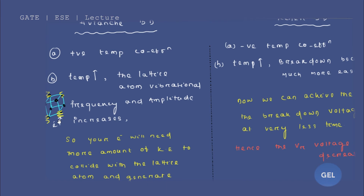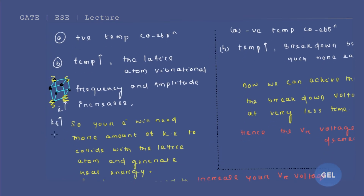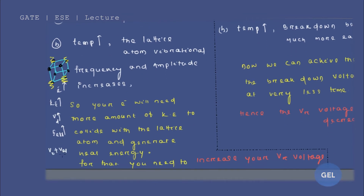So the electron needs more and more kinetic energy. How do we get more kinetic energy for the electron? In order to get more kinetic energy, you must have more drift velocity. In order to get more drift velocity, you must have a higher effective electric field, because electric field and drift velocity are directly proportional to each other. And to get a high effective electric field, from the formula E = (V₀ + V_applied) / W, your applied voltage must be higher.